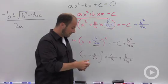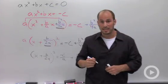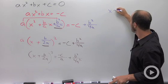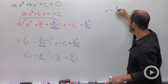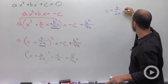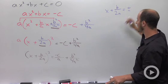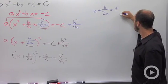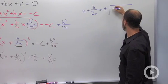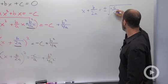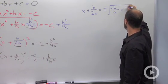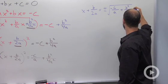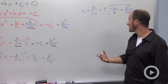So let's go over here and write it up. So what we end up with then is just x plus b over 2a, and that is going to be equal to plus or minus the square root of this side. Plus or minus the square root of negative c over a plus b squared over 4a squared. All right.